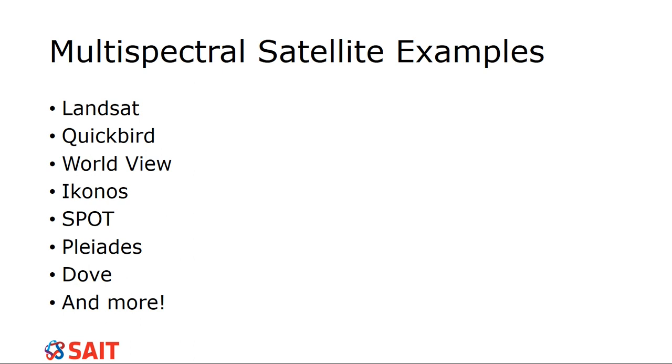Now, just a couple examples of multispectral satellites. So we have Landsat, Quick Bird, Worldview, Econo, Spot, Pleiades, Dove, and more. So many more. I think the last time I checked there was something like 300 remote sensing satellites in space. And there's probably more than that since I've checked.